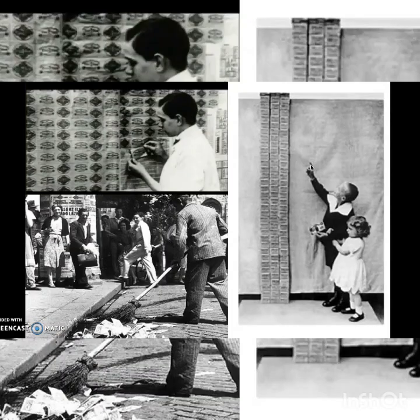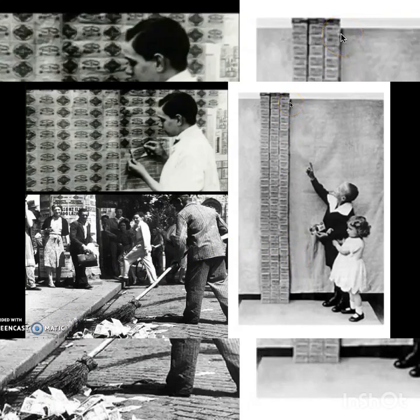Money became completely worthless in Germany. People used money as wallpaper, swept it into gutters, and children used stacks of it as toys because it couldn't buy anything. In fact, if you had a wheelbarrow full of money and got robbed, the thief would take the wheelbarrow instead of the money — because the wheelbarrow was worth more. Never print off money: it leads to inflation, which is exactly what the Weimar Republic did.